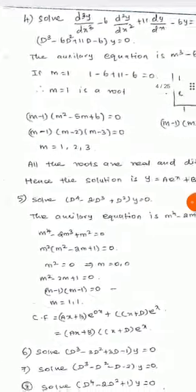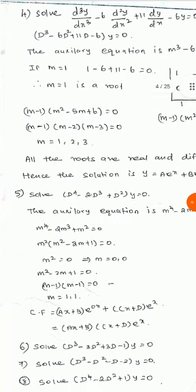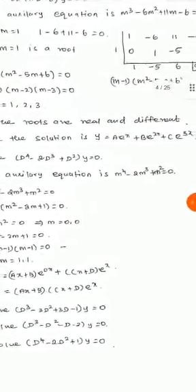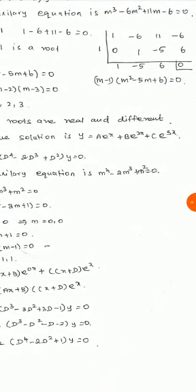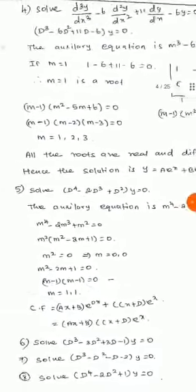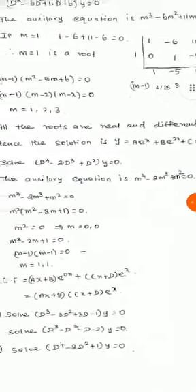Since the three roots m1=1, m2=2, m3=3 are real and different, the complementary function is CF = a·e^x + b·e^(2x) + c·e^(3x). Since the right-hand side equals 0, there is no particular integral. Therefore the complete solution is y = a·e^x + b·e^(2x) + c·e^(3x).